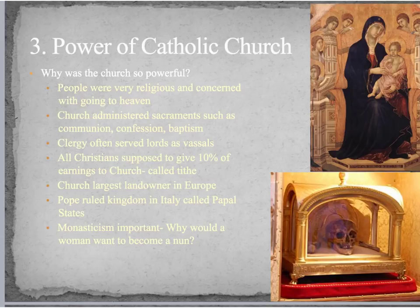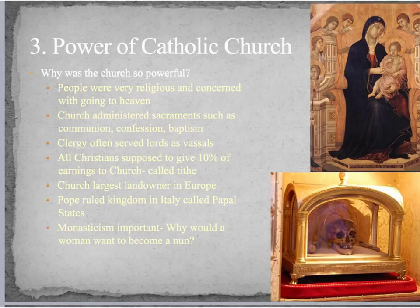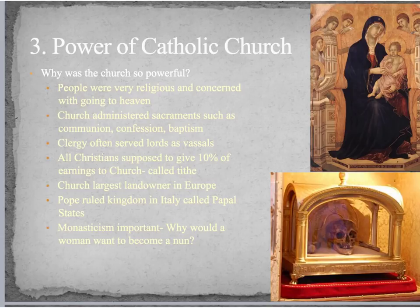The church was also the largest land owner in Europe, which gave them a lot of power. The pope even ruled a kingdom in Italy called the Papal States, so the pope was like a king as well as a religious leader — he had a lot of political power, went to war, and did all the things that kings do. Regarding monasticism, some women didn't become nuns voluntarily — their families forced them. But some women entered voluntarily because women didn't really have many options; becoming a wife and mother was essentially the only alternative. As a nun, you had the chance of being educated and making more of your own decisions.